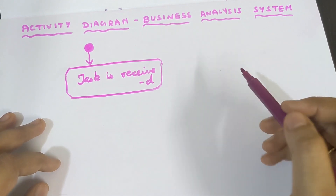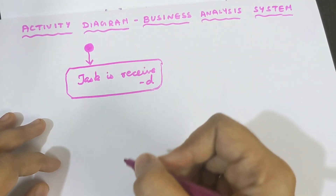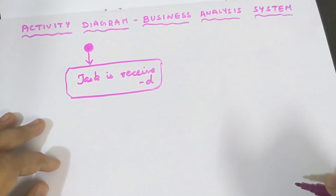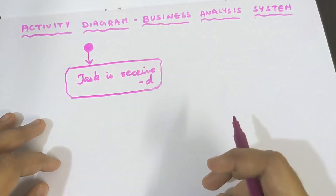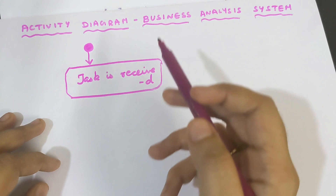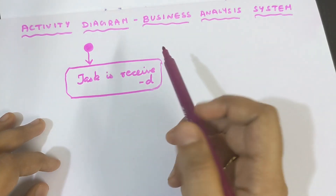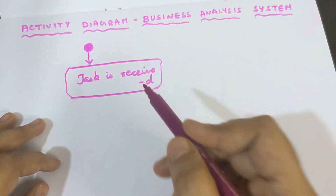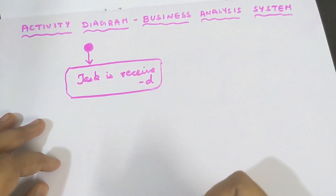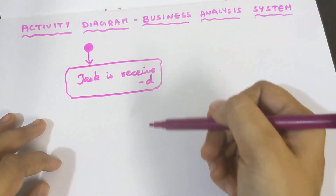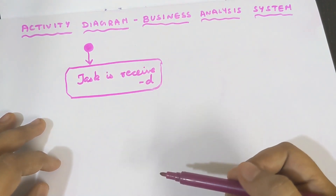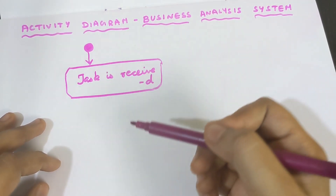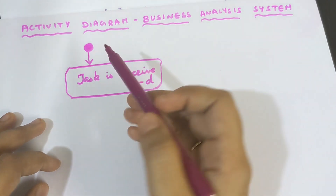You have to write every single process in the activity diagram. Whereas in other diagrams it is not mandatory to write every single step, here in the activity diagram you have to write every single step that is happening. All the steps need to be written in order — the order should not be shuffled, it should be in proper order.